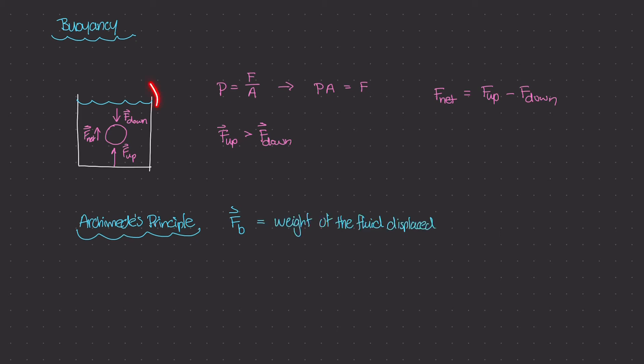If we go back to this container, we put some sort of object inside of this container, inside of this liquid, this fluid, and the actual volume of that object is the same volume of, in this case, water that got displaced. So this buoyant force is going to be the weight of that amount of water that got displaced.